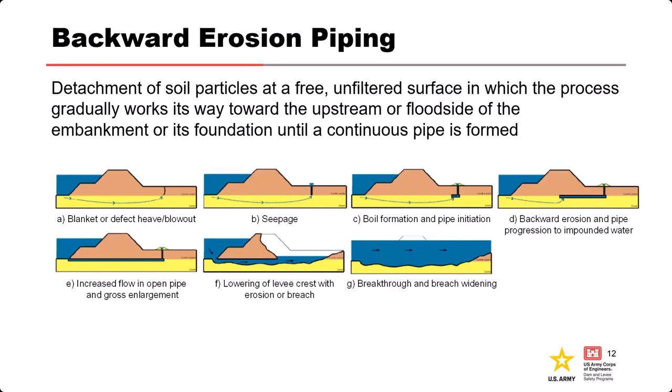There must also be erodible material within the flow path that can be carried to the exit, and the material being piped or the material directly above it must be able to form and support a roof or pipe. We need some kind of cohesive roof material so that a pipe can actually form without that collapse. The flaw is essentially a continuous path of erodible material that can conduct the seepage flow and drive the process.